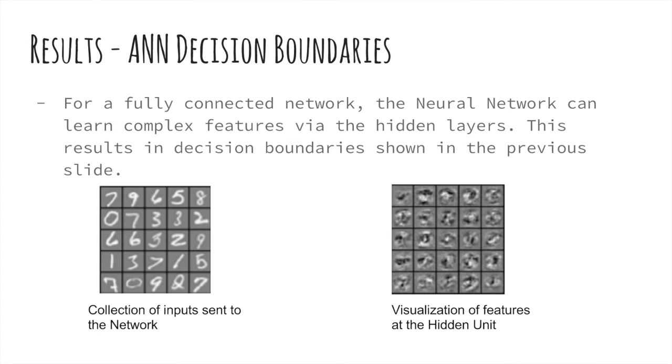Now, the previous slide showed some complex boundaries learned by just giving the normal features input. This is due to the feature learner hidden units. Depending on the final output, the hidden units and the hidden layers can learn complex features. The image on the left shows a collection of inputs given to an OCR digit classifier which detects characters and digits, while the image on the right shows how significant features are learned by the ANN to provide complex boundaries.